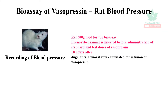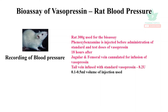The jugular and femoral veins are cannulated. Standard vasopressin is injected, and the tail vein is infused with standard vasopressin at 8.2 units.